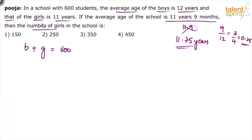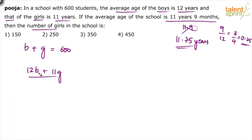We need to find the number of girls. The average age of boys is 12 years, so the sum of ages of boys is 12 × B. Sum of values equals average multiplied by number of values. Similarly, average age of girls is 11 years, so sum of ages of girls is 11 × G. Sum of ages of boys plus sum of ages of girls divided by total students B + G equals the average age of the entire school, 11.75. Since B + G = 600, we have two equations and two unknowns to solve.